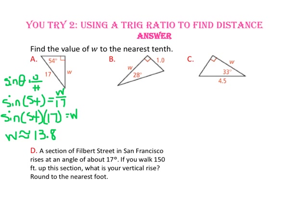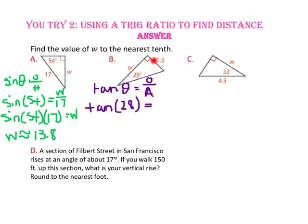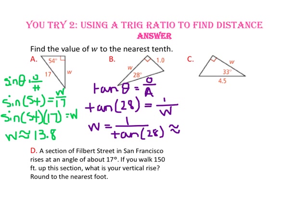For part B, we know the length of the side opposite our given angle and the length of the side adjacent to our given angle. Since tangent uses opposite over adjacent, we'll use the tangent ratio. Substitute 28 degrees in for theta, 1 in for the length of the opposite side, and W in for the length of the adjacent side. When the variable is in the denominator, we switch places and divide. W is approximately 1.9 units long.